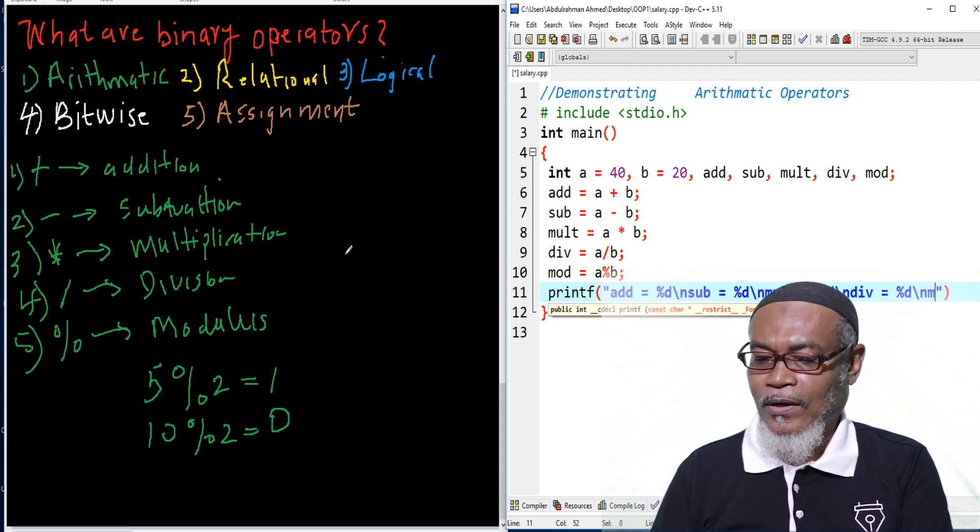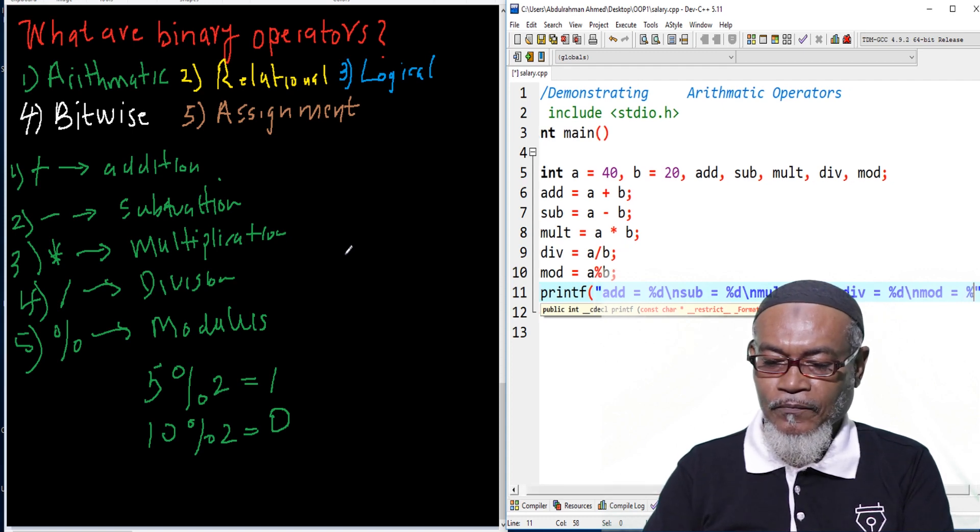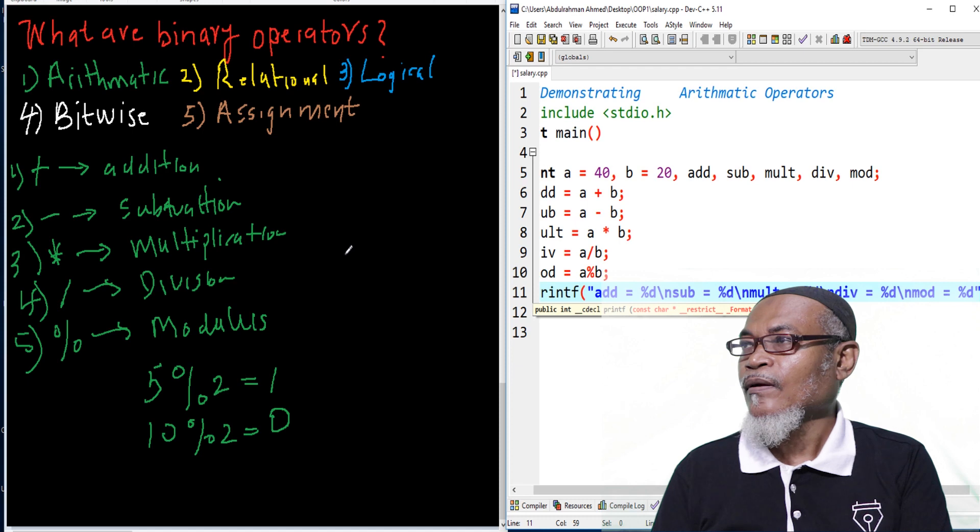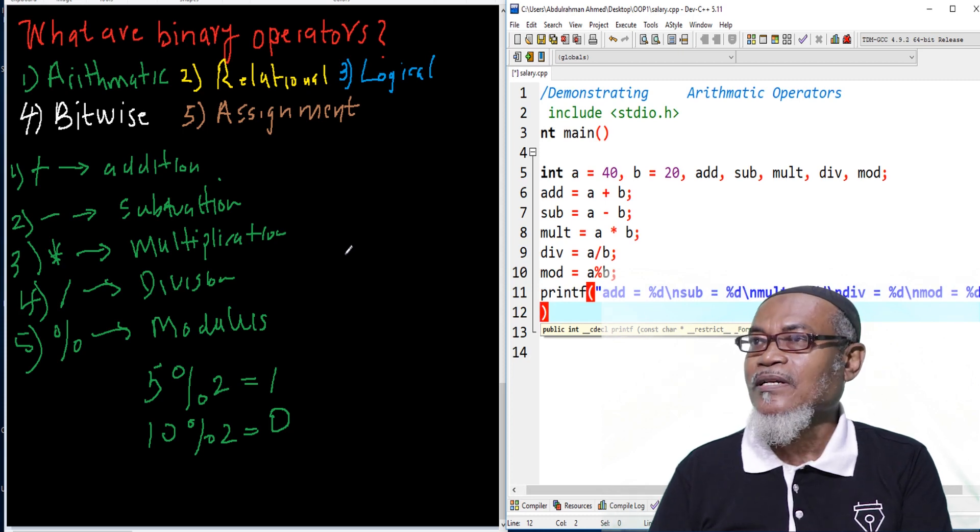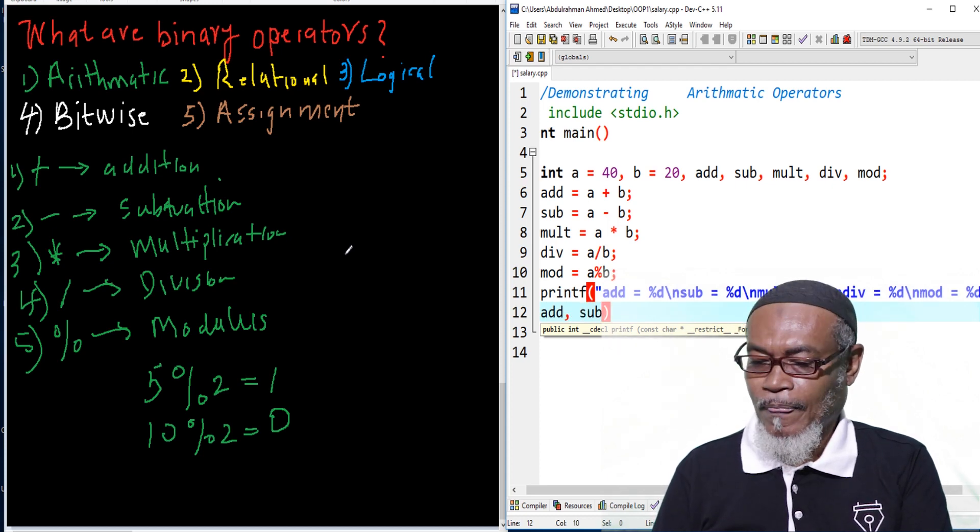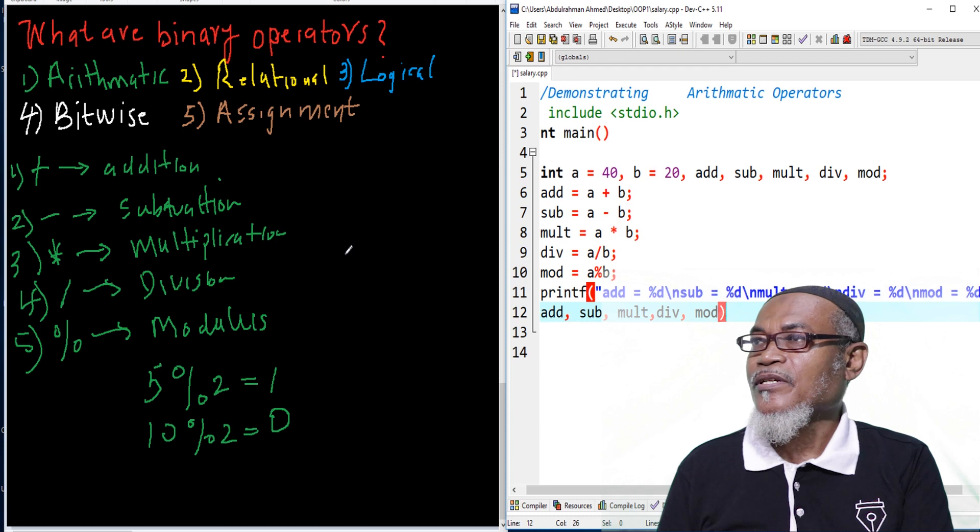And then, lastly, we're going to have our escape sequence, putting a new line. And then, we'll have our mod. And our mod, basically, will have our percentage D. Now, according to our format, we must now have all our variables. We are starting with a variable called add, a variable called sub, a variable called mult, a variable called div, and the last variable, we're going to have mod. And then, all statements must be terminated.